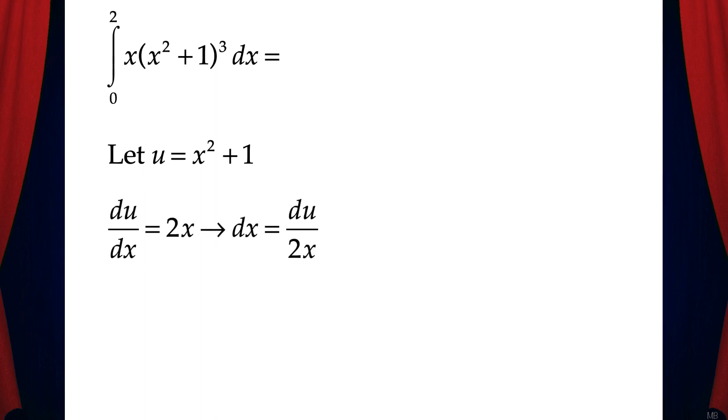That means du dx equals 2x. Then we'll rearrange this to get dx equals du over 2x. Now we can make the substitutions into the integral, and that gives us x times u cubed times du over 2x. Then we can cross out the x's and we have the integral in terms of u only.